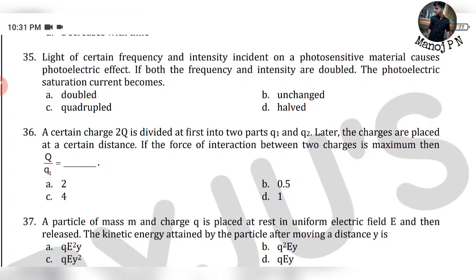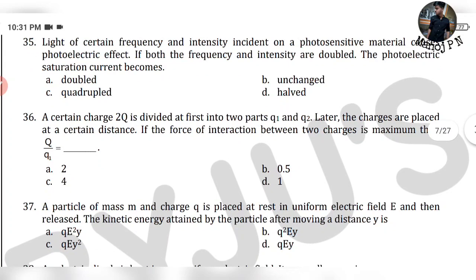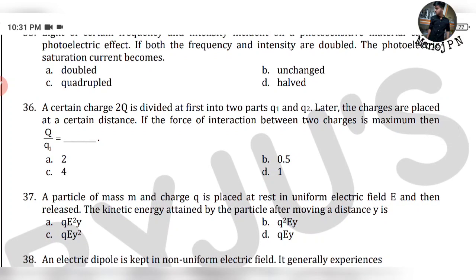35th question: Light of certain frequency and intensity is incident on a photosensitive material causing the photoelectric effect. If both the frequency and intensity are doubled, then the photoelectric saturation current becomes actually doubled. Why? Because photoelectric current is directly proportional to the intensity of the light.